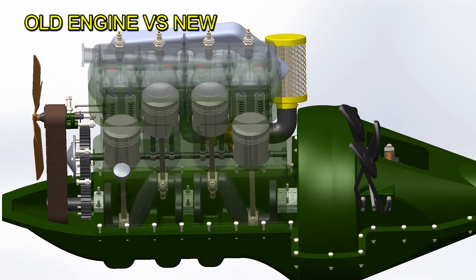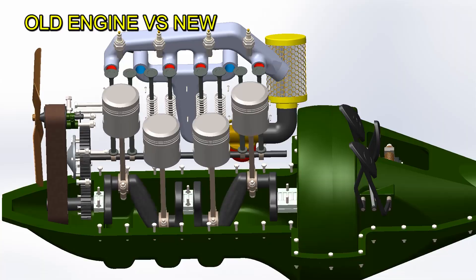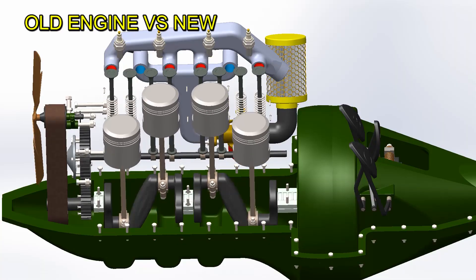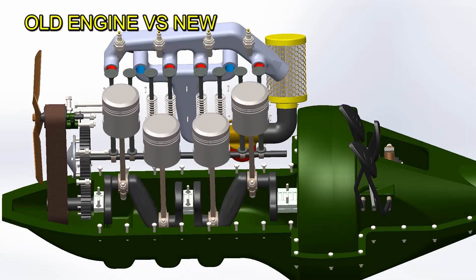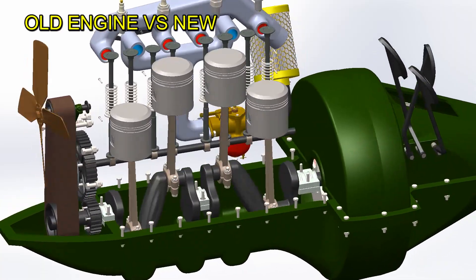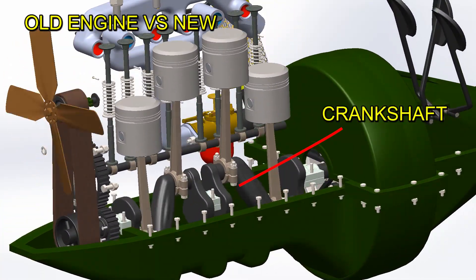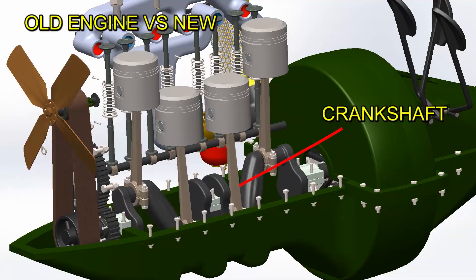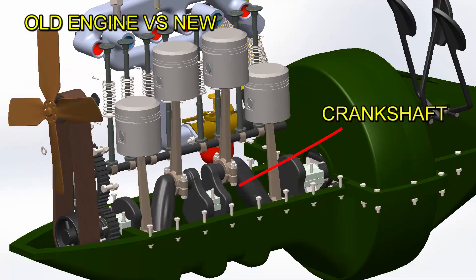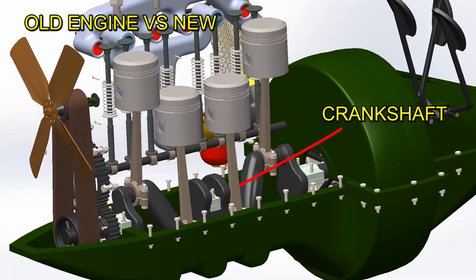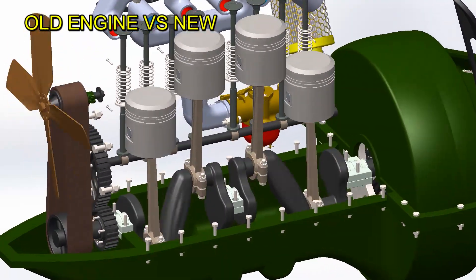The engine is a four-cylinder of 2.9 liters or 177 cubic inches. As a first observation, we can notice that the crankshaft has a large radius and the connecting rods are very long.